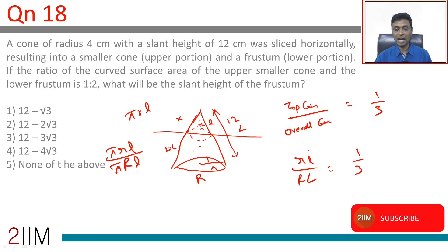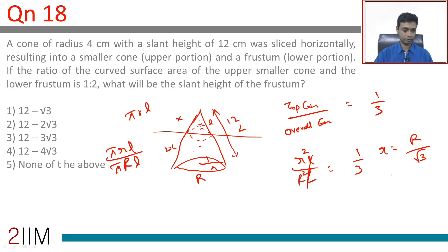r by R equals l by L. r² by R² is 1:3, or r by R is 1 by √3. That's all we need to do.